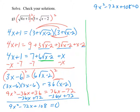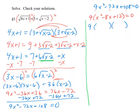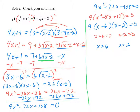We solve this quadratic by factoring. All coefficients are multiples of 9, so we factor out 9 to get 9 times the quantity x squared minus 8x plus 12 equals 0. We factor that trinomial by finding factors of positive 12 that add to negative 8, giving us x minus 6 and x minus 2 as factors. Using the zero factor property, we set x minus 6 equals 0 and x minus 2 equals 0, giving x equals 6 and x equals 2 as our two possible solutions.